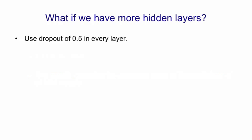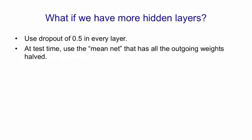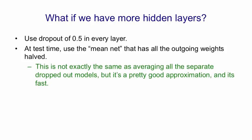If we have more than one hidden layer, we can simply use dropout of 0.5 in every layer. At test time, we halve the outgoing weights of all the hidden units, and that gives us what I call the mean net. So we use a net that has all of the units, but the weights are halved. When we have multiple hidden layers, this is not exactly the same as averaging lots of separate dropped-out models, but it's a good approximation, and it's fast.